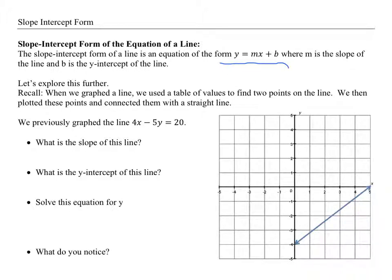So we already graphed this line, and here it is. Let's identify the slope of the line. Well, if I look down here, the slopes were going up 4 and right 5. So the slope will be up 4, right 5, so 4 fifths.